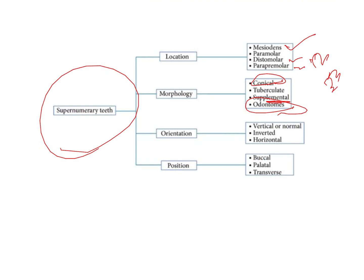Based on orientation, supernumerary teeth can be vertical or normal, inverted, and horizontal. Based on position, they can be placed buccally, they can be placed palatally, or they can be placed both in the buccal as well as palatal direction — horizontally placed with orientation on both the buccal as well as the palatal aspect.